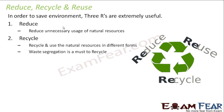The second R is recycle — recycle and use natural resources in different forms. Waste segregation is a must to recycle. There are some waste products which are biodegradable and some which are non-biodegradable. For example, plastic bottles that have become waste can be taken back to plastic factories and used to make new plastic bottles. That is recycling — turning the same old product into a newer product — and it helps save non-biodegradable waste.